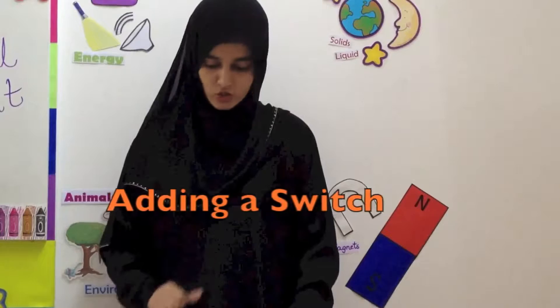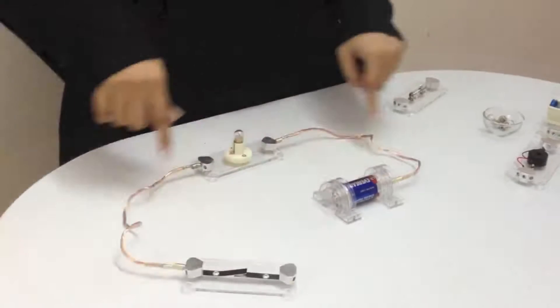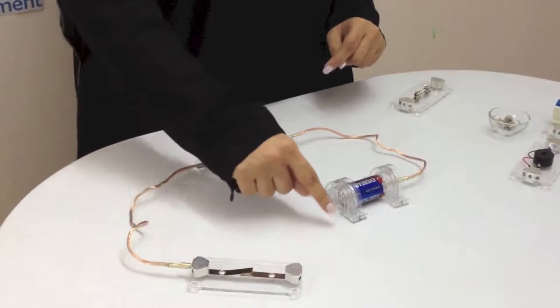Now I will add a switch to this circuit. This is our push switch. To add this to the circuit, I will remove this connector. For the circuit to be complete, I need another wire.